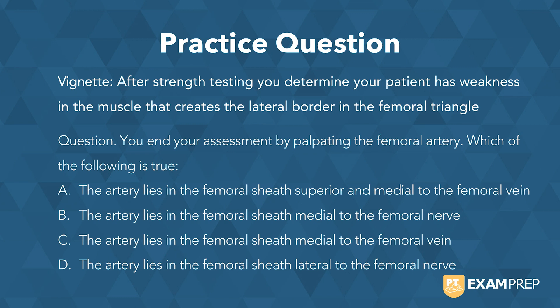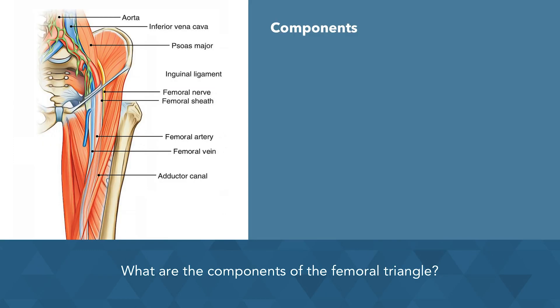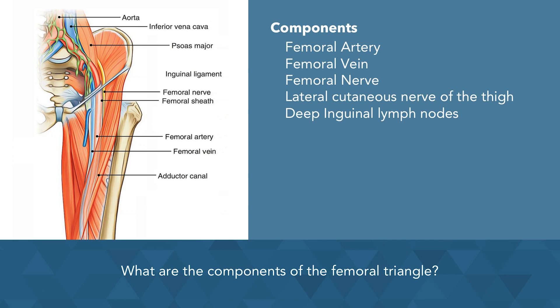Here's the trick. First, we have to know what the components of the femoral triangle are. We know there's the artery, vein, nerve, lateral cutaneous nerve of the thigh, and the deep inguinal lymph nodes. What we really need to know is the order. If you use the acronym VAN, this will help you: V stands for femoral vein, A for femoral artery, and N for femoral nerve. So the artery sits lateral to the vein and medial to the nerve. This will help you get these directional anatomy questions right for the femoral triangle.